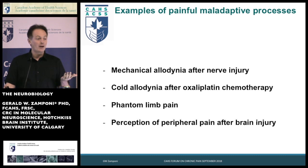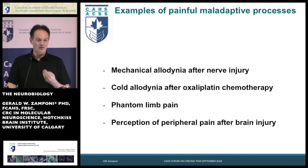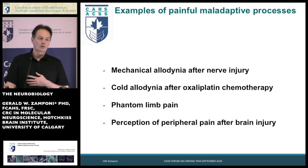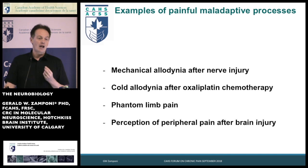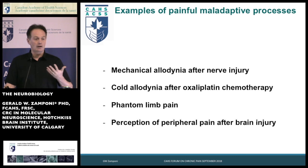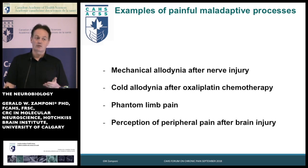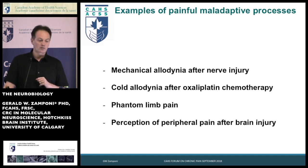Phantom limb pain is another example — you don't have your limb, but you're in pain and you feel your limb hurting. Or people have a stroke and destroy specific regions of the brain, giving rise to a severe perception of pain in limbs and extremities even though there is actually no injury. It's very hard to treat, so understanding the brain circuits responsible for that is a huge challenge.